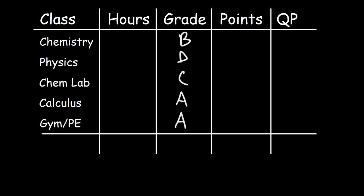The first thing you need to determine is the credit hours for each course. The chemistry course is a three-credit course, physics is the same, the lab is a one-credit course, calculus is a four-credit course, and PE is a two-credit course.